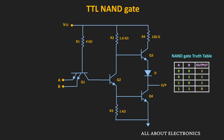Let us see how this circuit works as the NAND gate. Consider the case when both inputs A and B are zero, with the voltage at both input terminals roughly equal to 0.2V. With this voltage, both base-emitter junctions of Q1 will get forward biased, and therefore the voltage at the base will be roughly equal to 0.9V. With this voltage, the collector-base junction of Q1 will also get forward biased, making the voltage at the collector roughly equal to 0.3V.